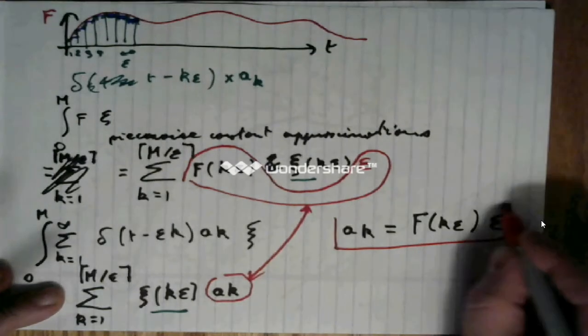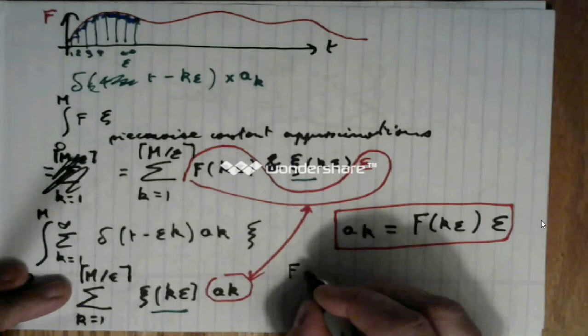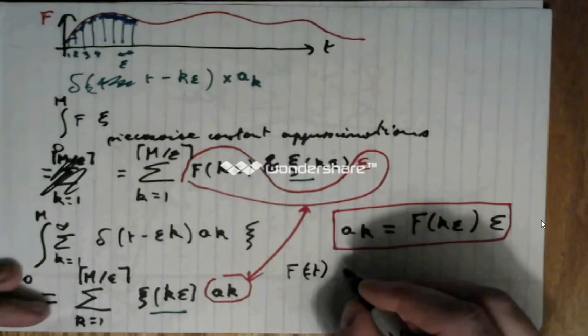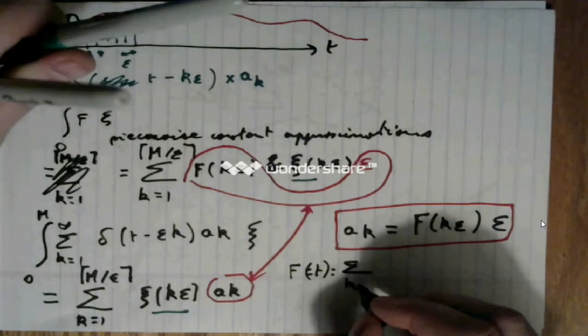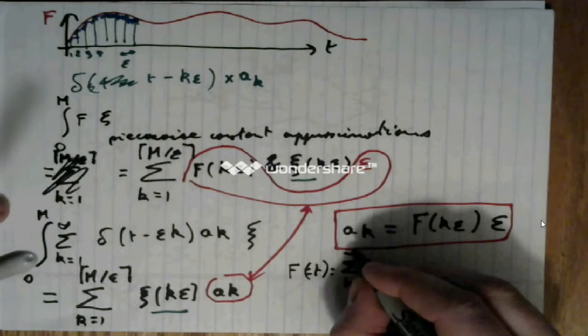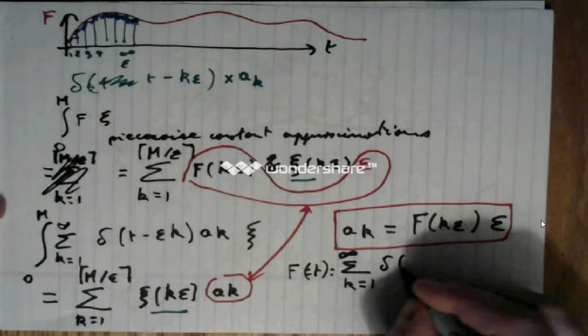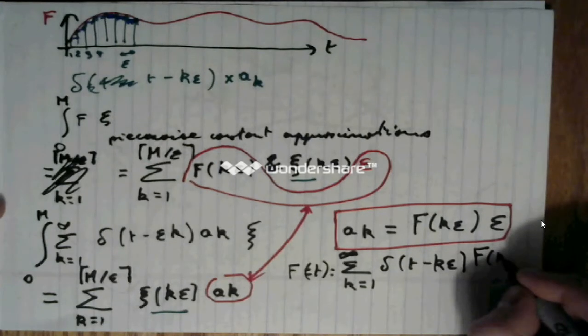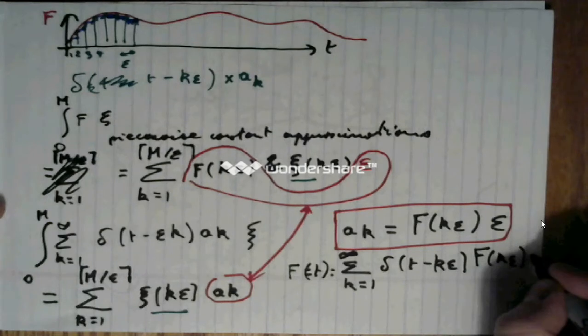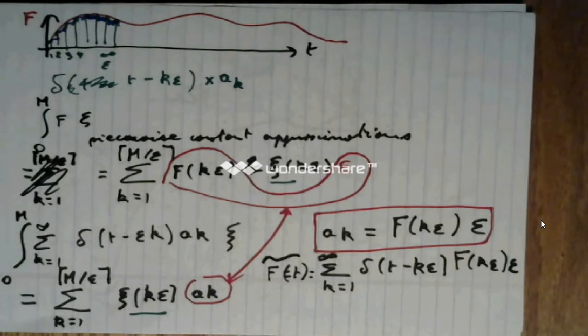By doing so, we have an approximation of f by means of impulses. And my f becomes, f of t becomes, sum from k is equal to 1 through infinity of delta of t minus k epsilon times f of k epsilon times epsilon. And of course, this is an approximate expression for f.